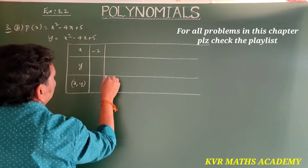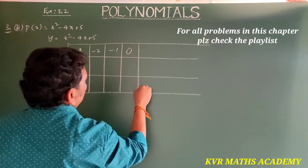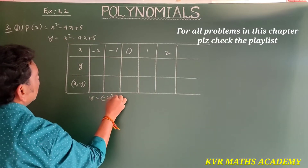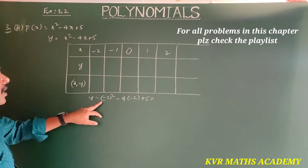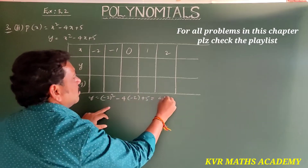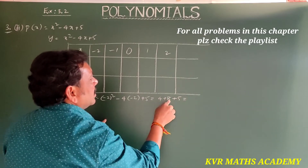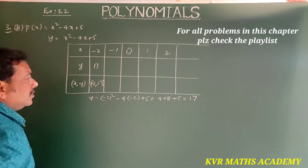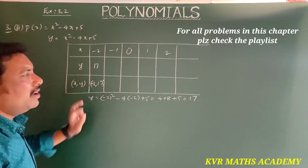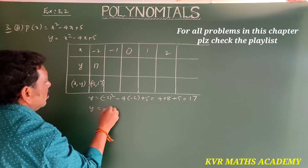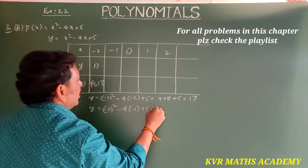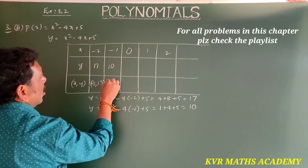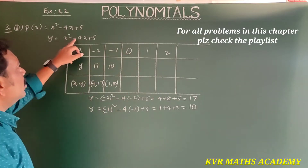Taking x values from -2 to 2. For x = -2: y = (-2)² - 4(-2) + 5 = 4 + 8 + 5 = 17. So ordered pair is (-2, 17). For x = -1: y = (-1)² - 4(-1) + 5 = 1 + 4 + 5 = 10. So ordered pair is (-1, 10).